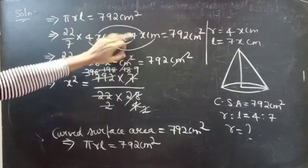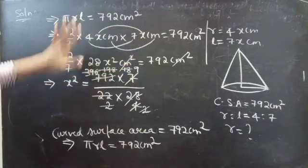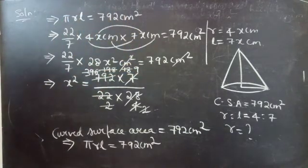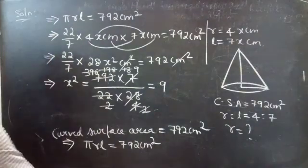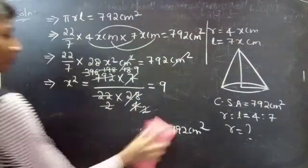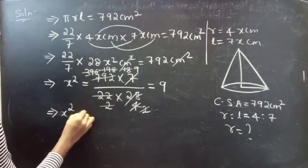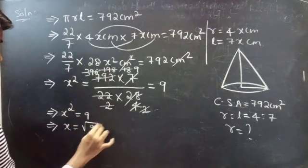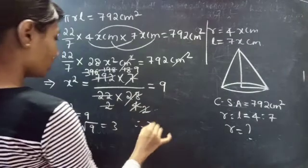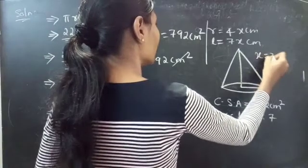After cancelling 7, we get 22 into 4x² equals some value, and we find x² equals 9. From this we get x equals the square root of 9, which equals 3. Therefore x equals 3.